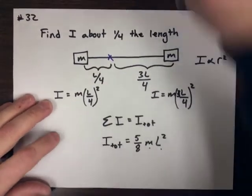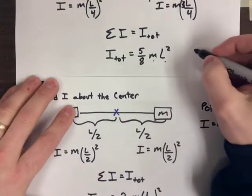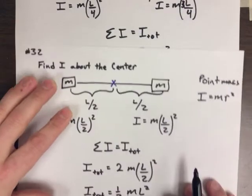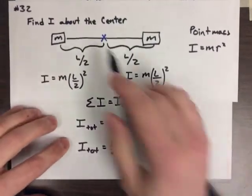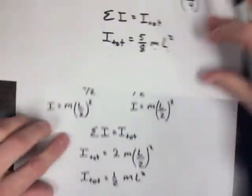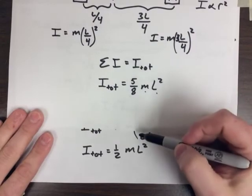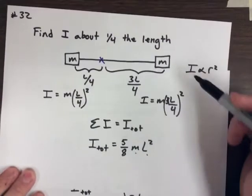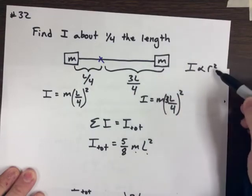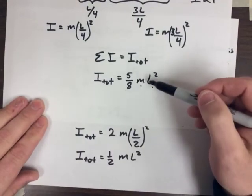Now, if I go ahead and look at these two problems kind of side by side here. For the one fourth the length, I got five eighths. For the one half, I got one half. So, you'll notice that five eighths is a little bit bigger than one half. What that means is, because moment of inertia is dependent on r squared, this one's further out, that bigger r makes a big difference. And so, we get the larger moment of inertia.